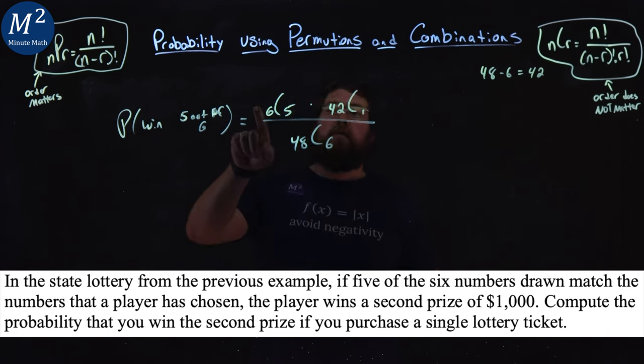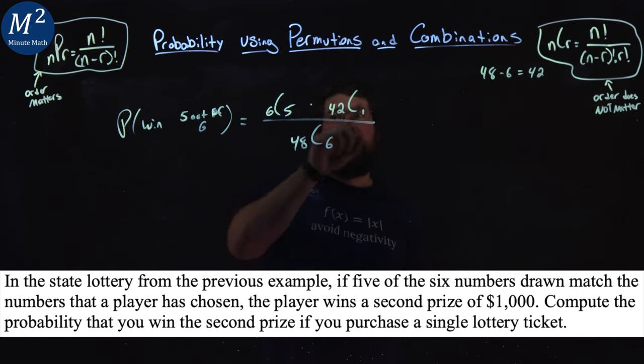So remember, there's six correct numbers out there. We're getting five of them correct. Five of them match up with the winning lottery. And there's 42 left after the six that were correct in the lottery. And we have to get one of those.